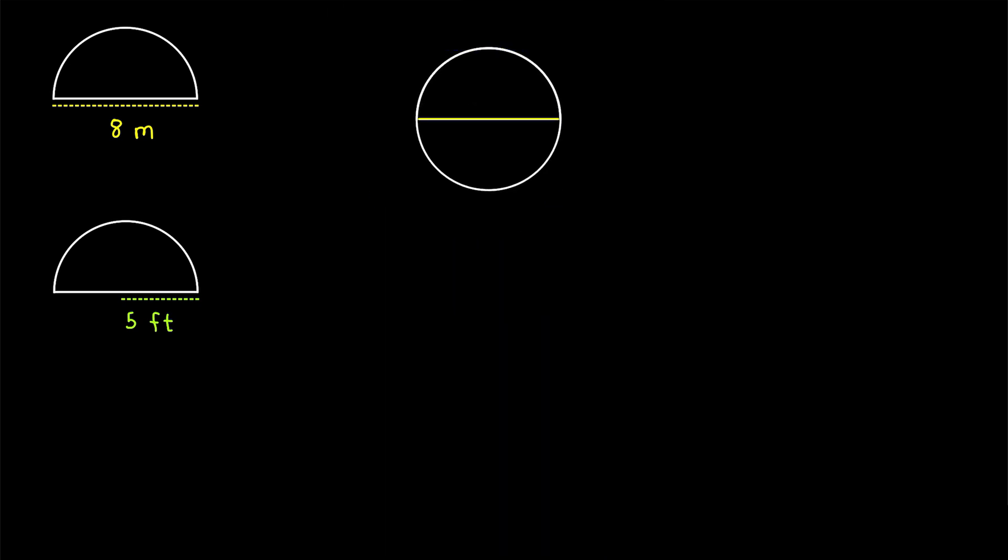Here is a standard circle. We've got a diameter drawn here in yellow. So what parts of this circle make up the perimeter of our semicircle? Well, one part is this here, which is half of the circumference of the whole circle.